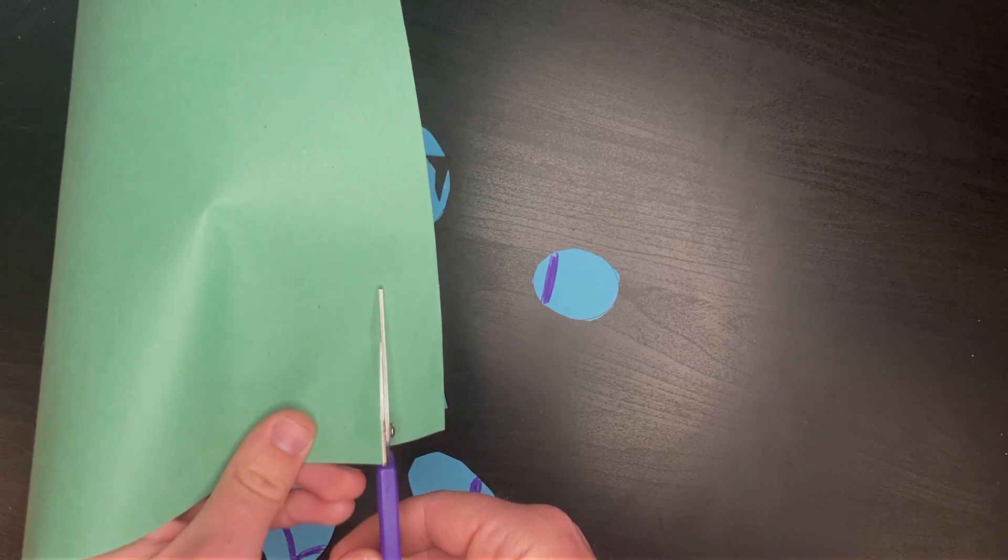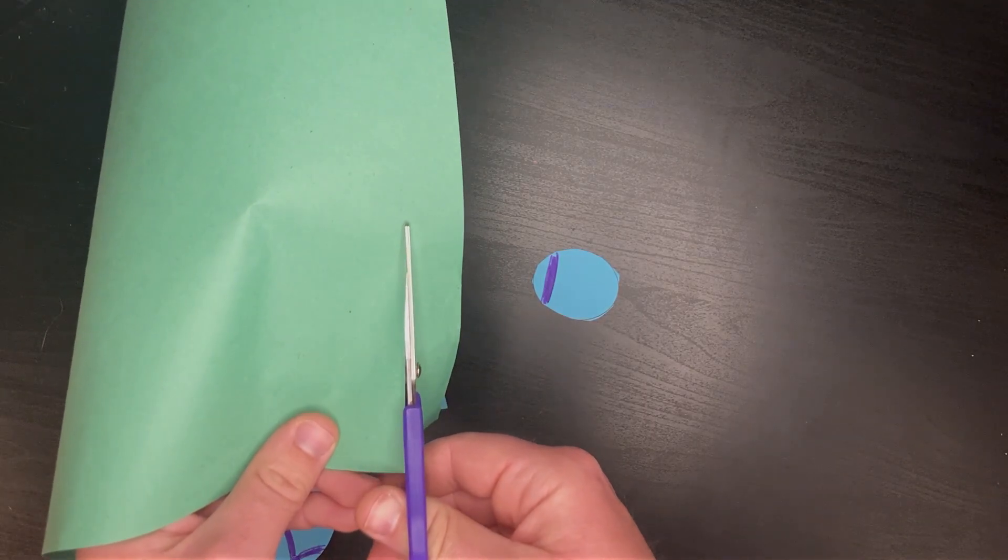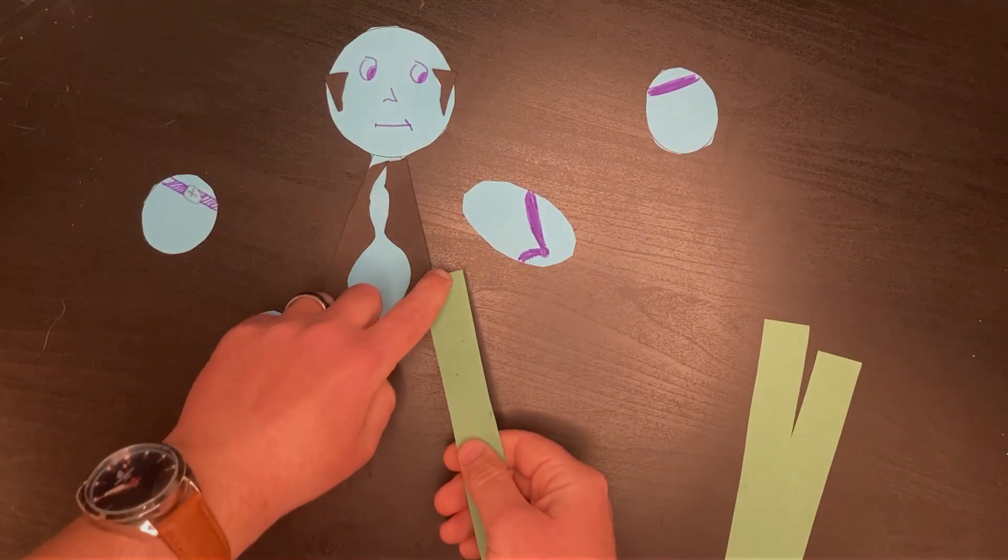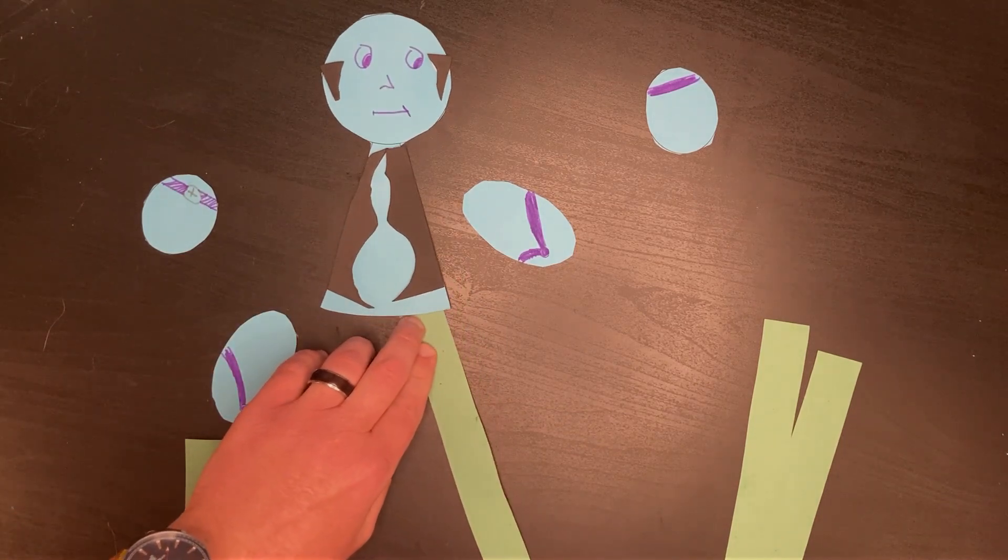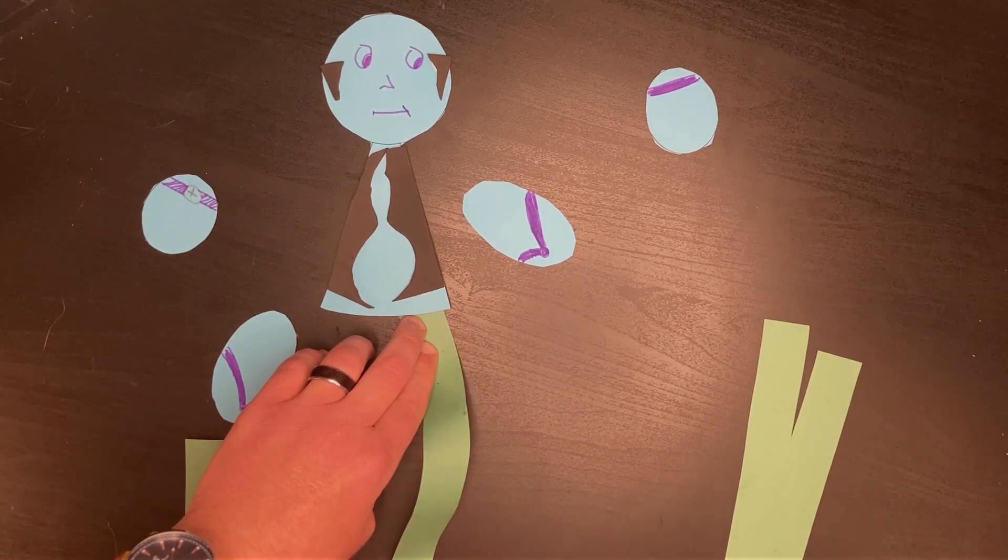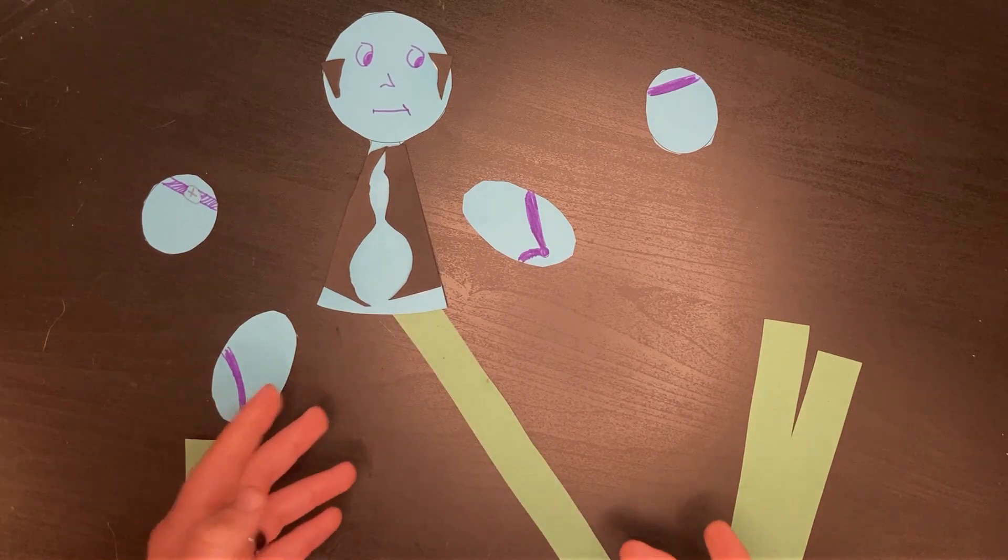Cut your construction paper into long, straight strips. Now, if you just attach these flat and ordinary pieces to the puppet, well, it won't be a very joyous figure.